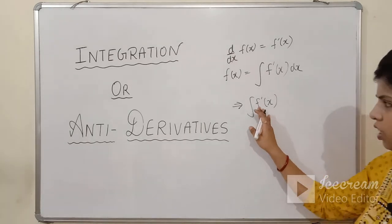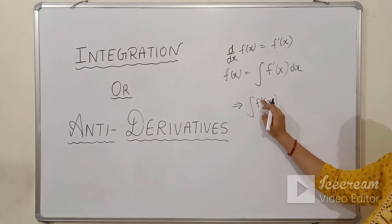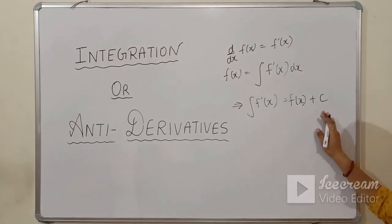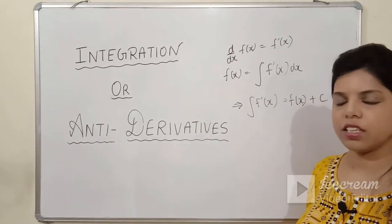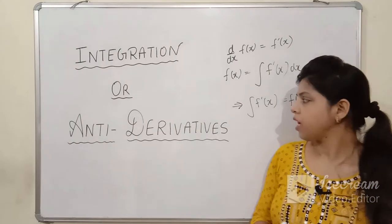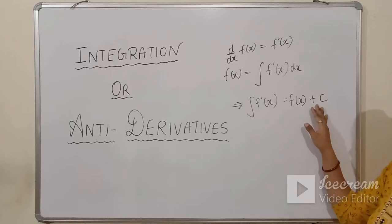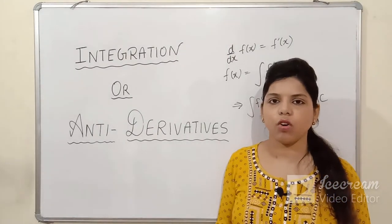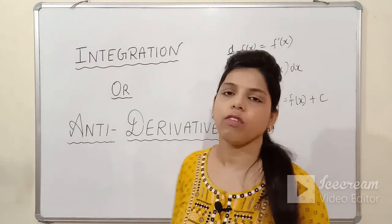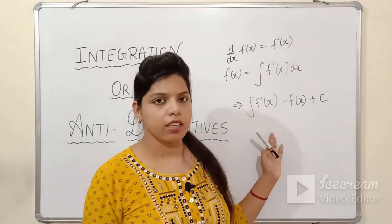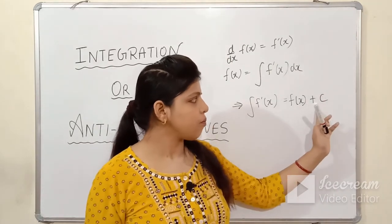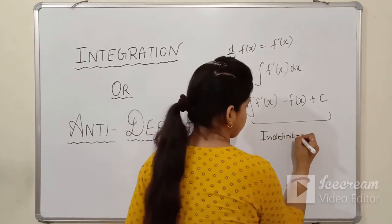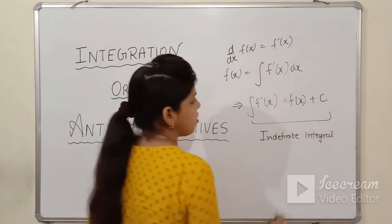Whenever we integrate any function, the differentiation of any function gives us a function plus always a constant C. There are two types of integration: indefinite integral and definite integral. Indefinite integral includes this constant C — we are not sure about the value of C, so that is why it is called indefinite integral.